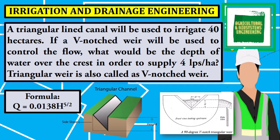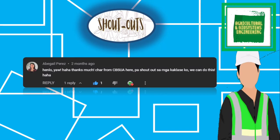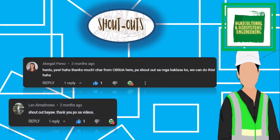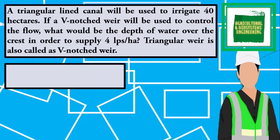Triangular weir is also called as V-notched weir. Before we proceed in solving this problem, let us first have our shout out. Here is how to solve for the problem.